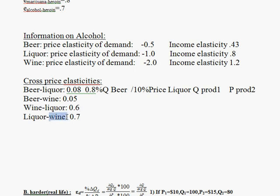When we reverse it and raise the price of wine, the response in the quantity of liquor purchased is a little more responsive. For a 10% increase in the price of wine, we would see a 7% increase in the quantity of liquor. So wine and liquor are fairly close substitutes, whereas beer and liquor, and beer and wine, don't have that kind of close relationship. Hopefully now, if you see an elasticity, you'll know what it tells us and be able to interpret it.